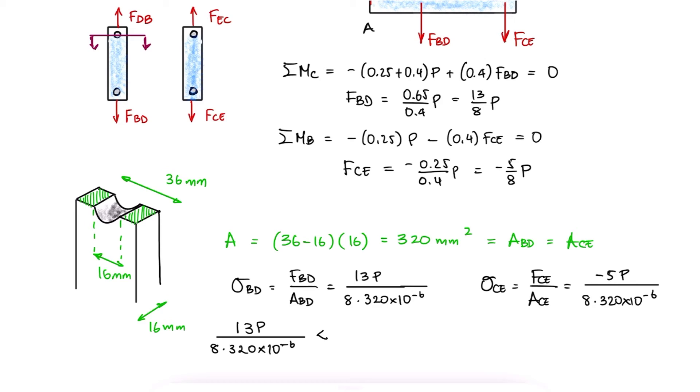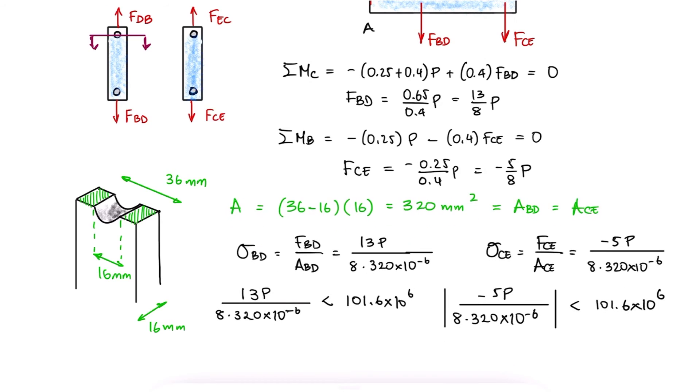If the absolute value of neither of these stresses should exceed the yield strength, we find that the load shouldn't be higher than 20,000 newtons for link BD not to yield and lower than 52,020 newtons for link EC not to yield.